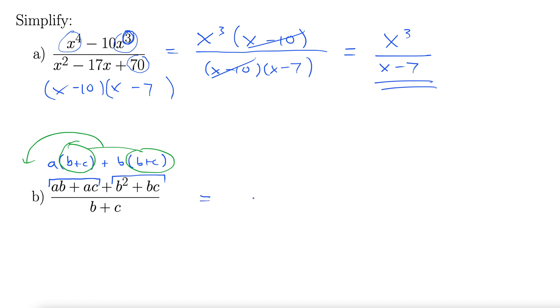That gives us a b plus c in the front. And what does it leave behind? a plus b. Down below, we still have a b plus c. And now, since these parentheses are, sorry, since these pluses are inside parentheses, we can factor this thing.